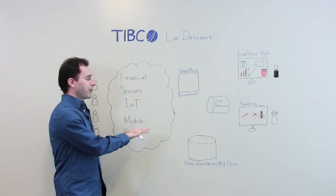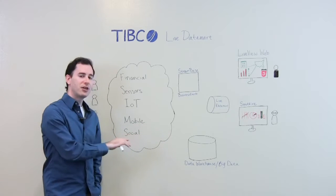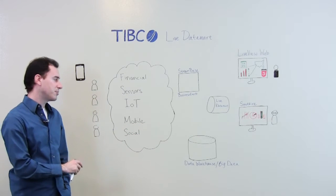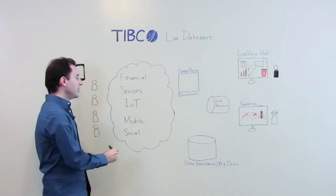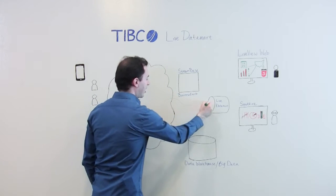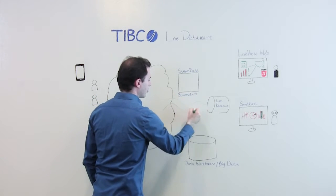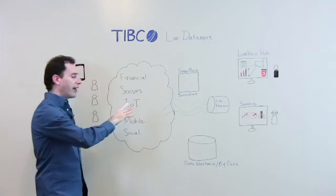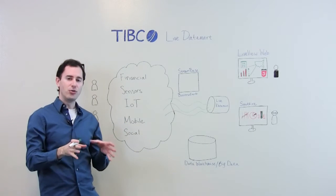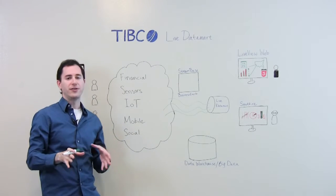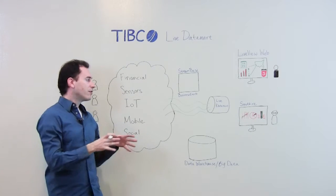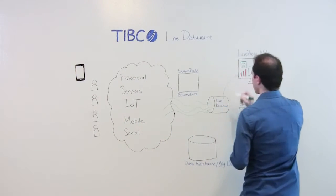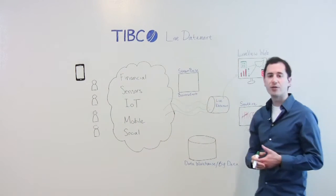First, Live Datamart. As a refresher, Live Datamart is an in-memory continuous query processor. What does this mean? It means it takes streams of live streaming data, ingests them, and creates a window of view on that real-time data for you to be able to power visualizations, alerts and actions.